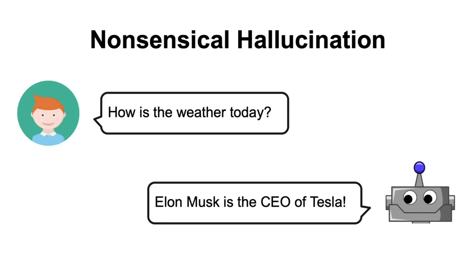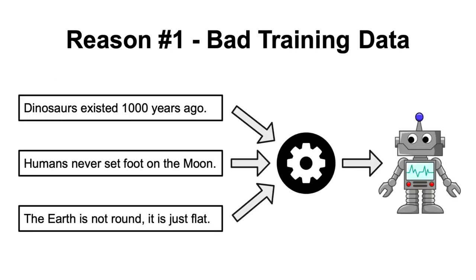Now it's time to answer the next question: why do language models hallucinate? One of the main causes of hallucinations is the data the language model has seen during training, which usually contains false facts or nonsensical data, which especially affects the factual type of hallucination. For instance, a part of the training data used to train ChatGPT was Reddit. Do you think that everything written on Reddit is true? Probably not. So why would we expect all the things these models say to be correct? They are more or less parroting what they have learned from the training corpus.